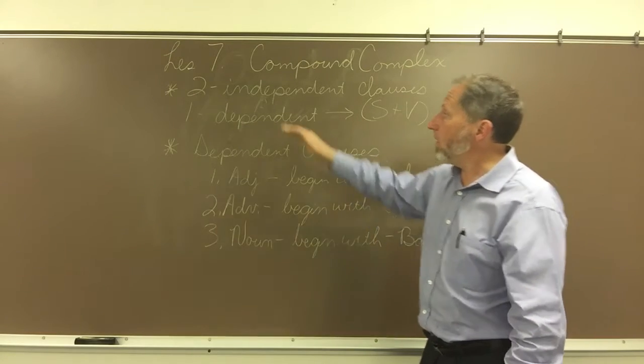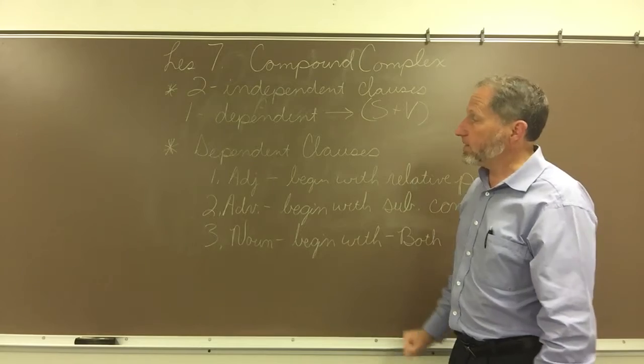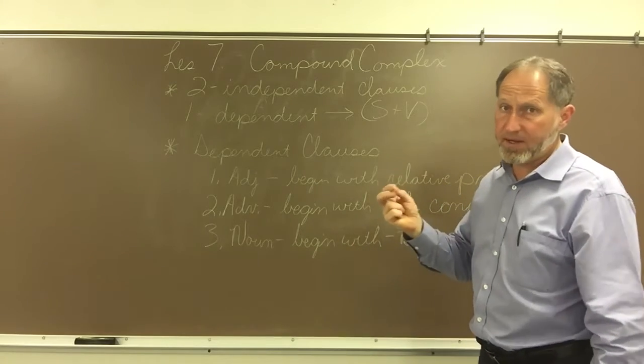Again, compound complex sentence: at least two complete sentences put together either with and, but, or, or with a semicolon. Somehow they need to be joined, and then one of those sentences needs a dependent clause.